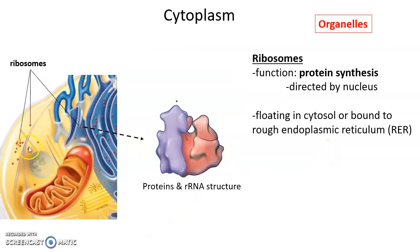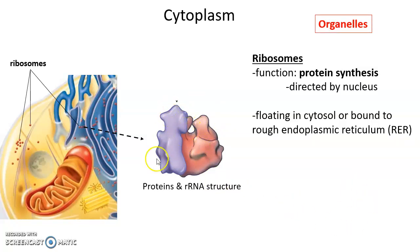Ribosomes are tiny protein-RNA organelles. They are extremely important because they are the structures that produce proteins — their function is protein synthesis. The proteins they produce are determined by commands and directions that come from the nucleus. Ribosomes, made of proteins and RNA, can be found floating free in the cytosol or bound to the rough endoplasmic reticulum.